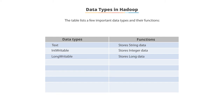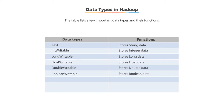LongWritable, as the name suggests, stores long data. Similarly, other data types are FloatWritable for storing float data and DoubleWritable for storing double data. There are also BooleanWritable and ByteWritable data types. NullWritable is a placeholder when a value is not needed.